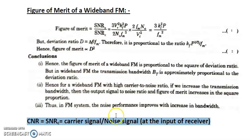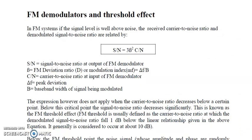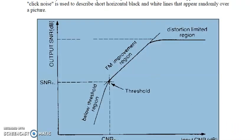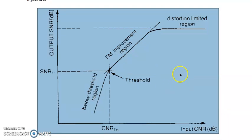Now let us look at the graph for better understanding of the threshold effect. The graph shows the relationship between signal-to-noise ratio at the output of the receiver versus the carrier signal-to-noise ratio at the input of the receiver, drawn using the figure of merit formula.